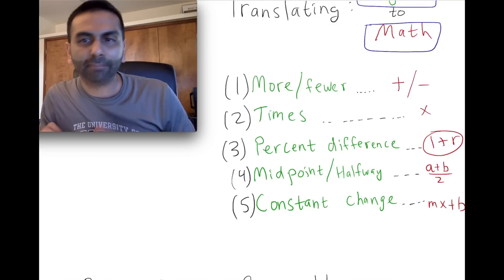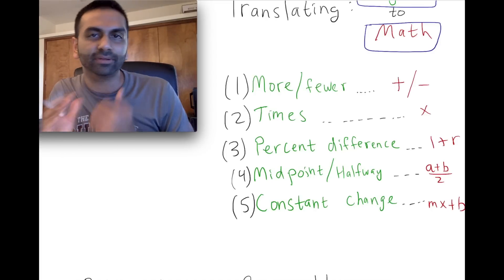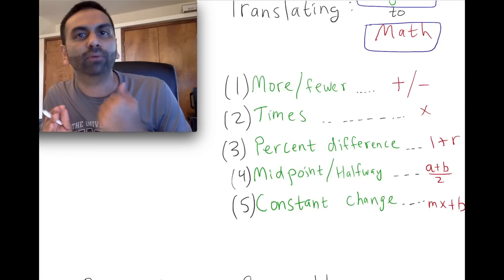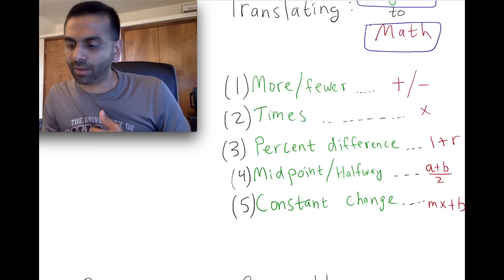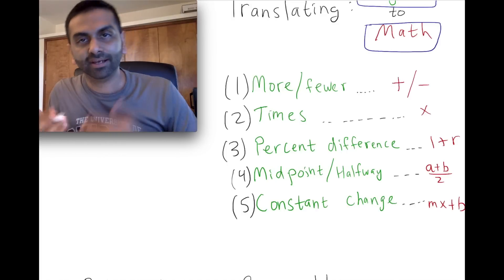In general, one plus r, where r is the percentage difference—you do the whole decimal thing where 17 percent is not really 17 but 0.17. So essentially one plus 0.17 is 1.17, and so that's what you multiply.